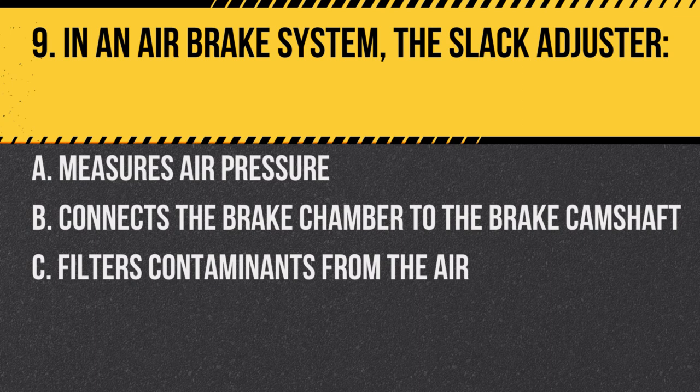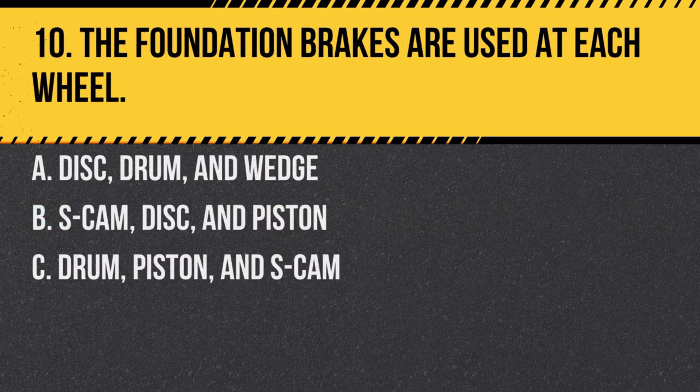Question 9. In an air brake system, the slack adjuster: A. Measures air pressure. B. Connects the brake chamber to the brake camshaft. C. Filters contaminants from the air. Answer B. Connects the brake chamber to the brake camshaft. It converts air pressure into mechanical force.